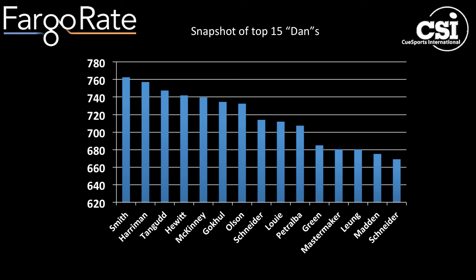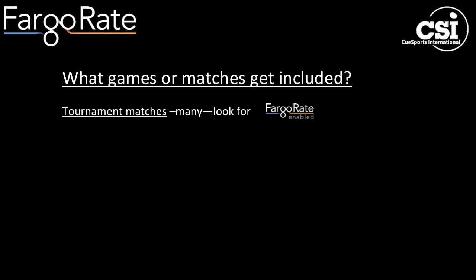Or I might look up the top 15 players in the world with the first name of Dan or Danny — turns out there are about 300 of them in the system, and amongst the top 15 there are players from the U.S., from Canada, from Sweden, from Switzerland, and from Great Britain. So what games or matches get included in the Fargo Rate system? For tournament matches, there's a large and growing number — look for the Fargo Rate-enabled symbol, and certainly this includes any of CSI's tournaments that use the CTS QSports tournament system software.